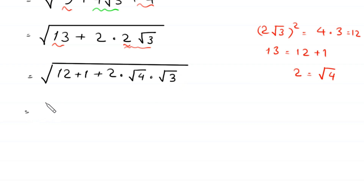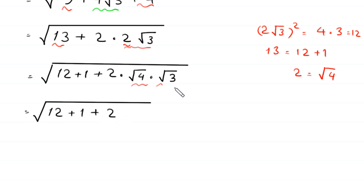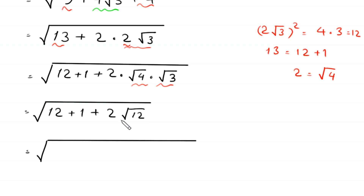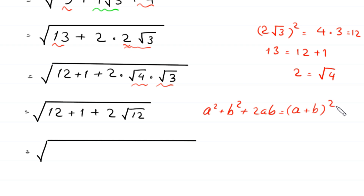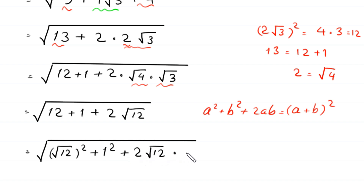Next, square root of — we can write this expression as a perfect square in the form of the algebraic identity a squared plus b squared plus 2ab is equal to (a plus b) whole squared. So we write 12 as (square root of 12) squared, 1 as 1 squared, and 2 times square root of 12 times 1.